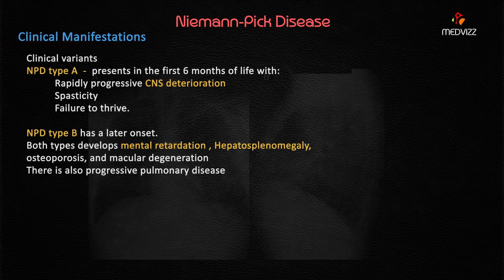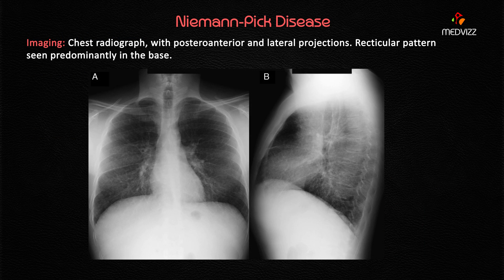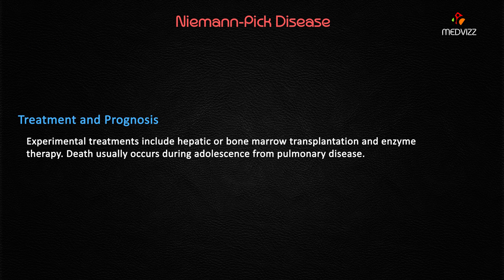For imaging, there will be a reticular infiltrative pattern on the chest X-ray film. Regarding treatment and prognosis, experimental treatments include hepatic and bone marrow transplantation and enzyme therapy, but none are curative. Death usually occurs during adolescence, specifically from pulmonary disease.